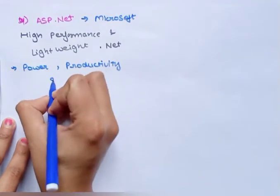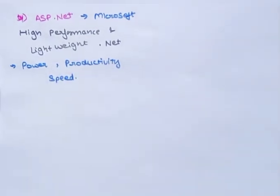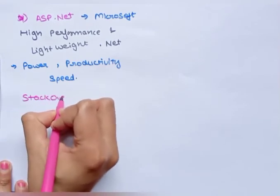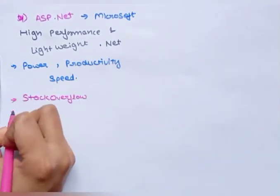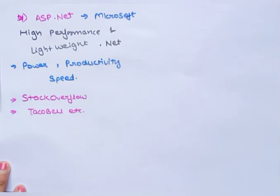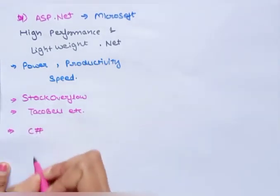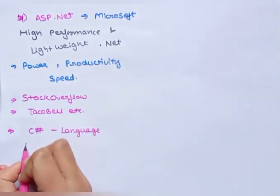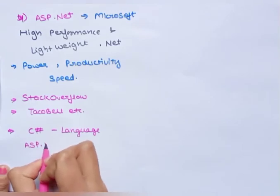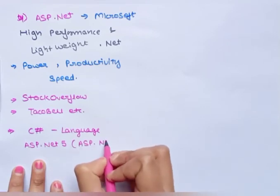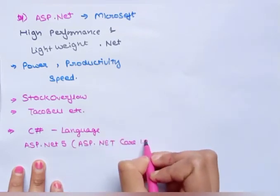Websites developed using ASP.NET include Stack Overflow and Taco Bell. The language used is C#, and the latest version is ASP.NET 5, also known as ASP.NET Core 1.0.